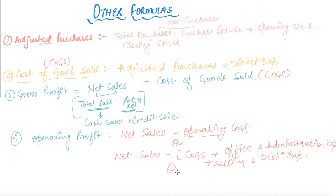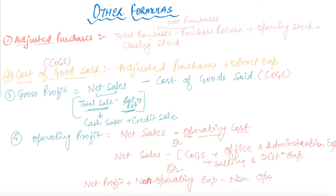There is a second formula for calculating Operating Profit: Net Profit plus Non-Operating Expenses minus Non-Operating Income. So there are basically two formulas for operating profit: one is Net Sales minus COGS minus Operating Expenses minus Selling and Distribution Expenses, and the other is Net Profit plus Non-Operating Expenses minus Non-Operating Income.